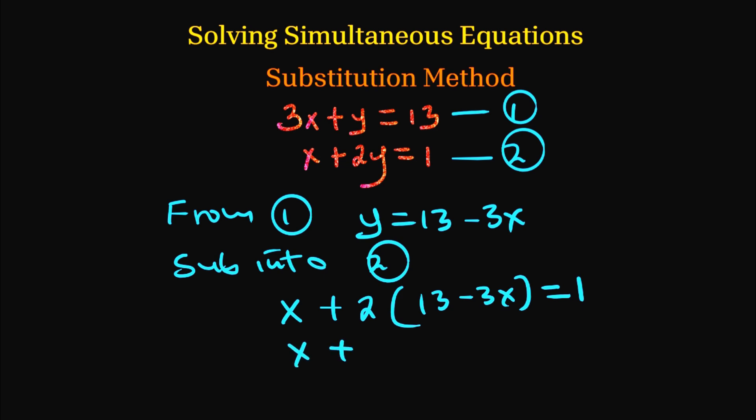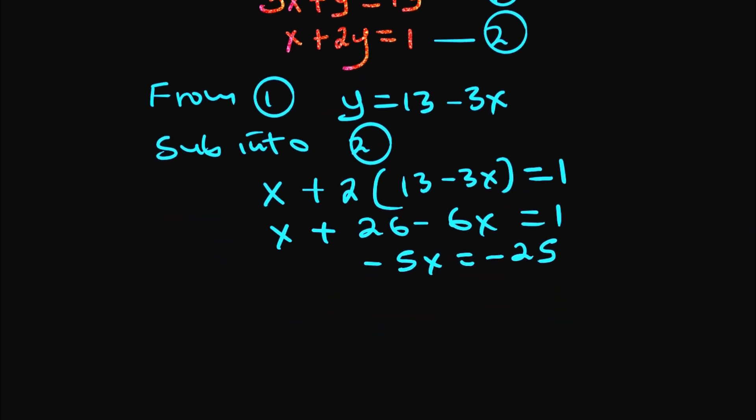So we have x plus 26 minus 6x equals 1. We collect like terms where we have x minus 6x, that is minus 5x. Then we take 26 to the other side, that is 1 minus 26, which is minus 25. So now we divide both sides of this equation by negative 5 so that we have x equals 5.